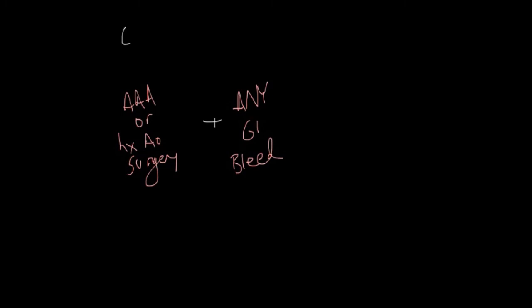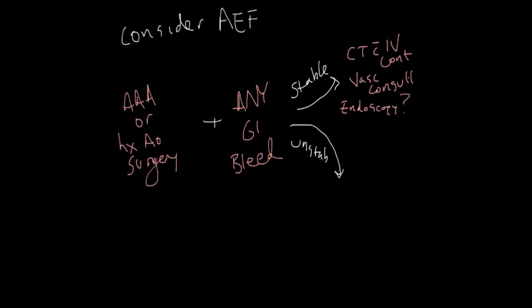And in these cases, stability will help determine your disposition and workup. If stable, get a CT with IV contrast, vascular surgery consult, and make preparations for any resuscitation that might be needed. There are some proponents of endoscopy as the next step, more so to rule out other major causes of GI bleeding. However, it seems that more of the literature has been leaning towards getting a CT first, given that the resolution of our scanners are getting better and better.